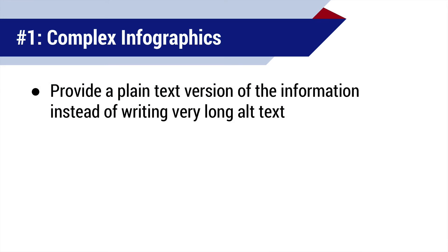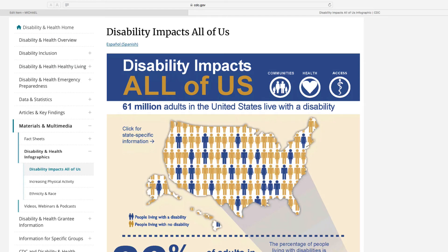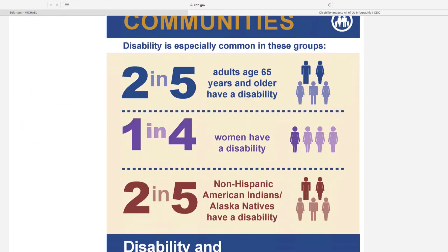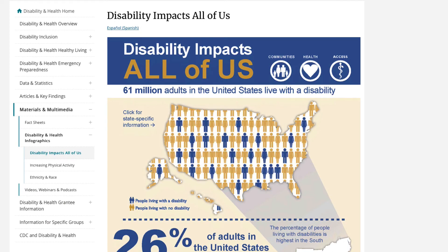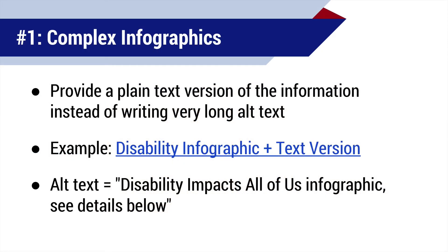Some of your images might actually be complex infographics, which means that a few words or a sentence won't be able to convey all the visual information. However, making this kind of content accessible doesn't mean writing the world's longest alt text essay. Instead, you can provide a plain text version that gives your readers the same information in a more accessible form. Here is an example infographic from the CDC. The graphic-only version is at the top, and then below it the same information is repeated in plain text form. Because of that, the alt text for the original image can be really simple — just the name of the infographic and then the instruction to see details below. This plain text version is also helpful more broadly, since the text will be searchable, easy to copy-paste, and cheaper to print.